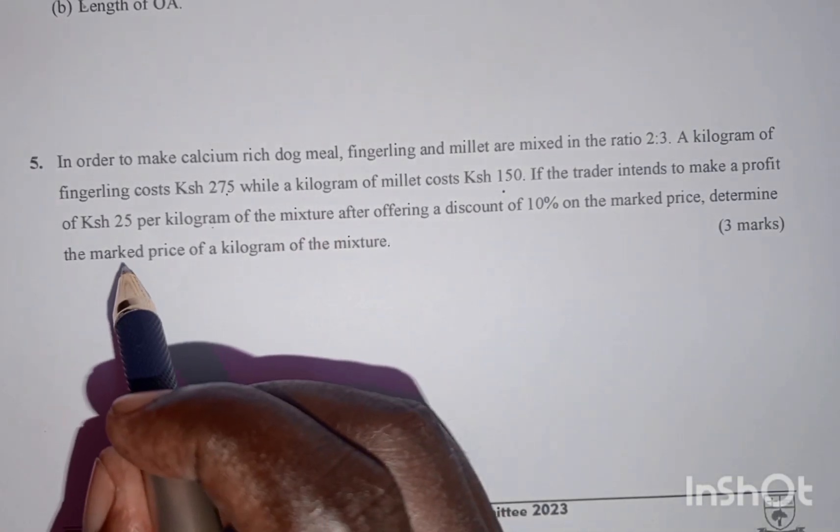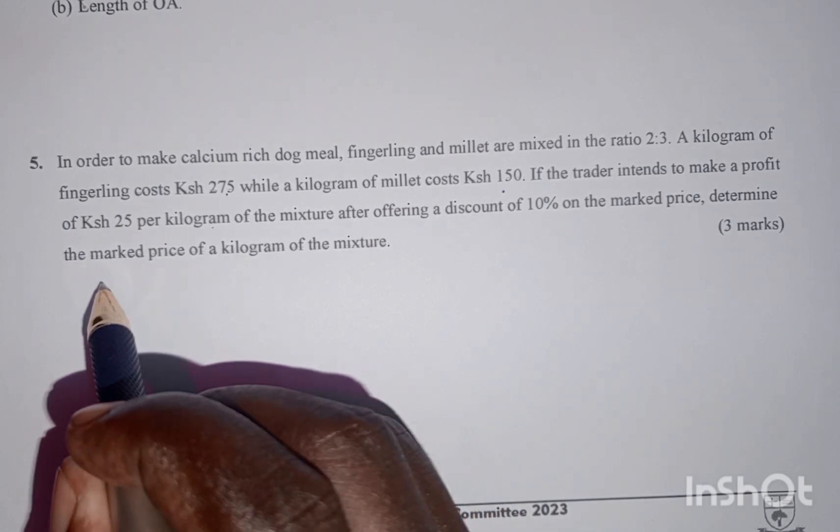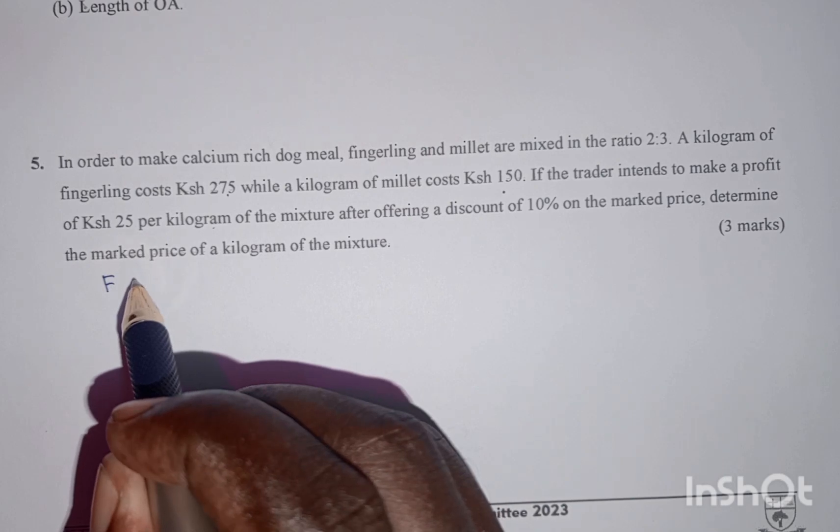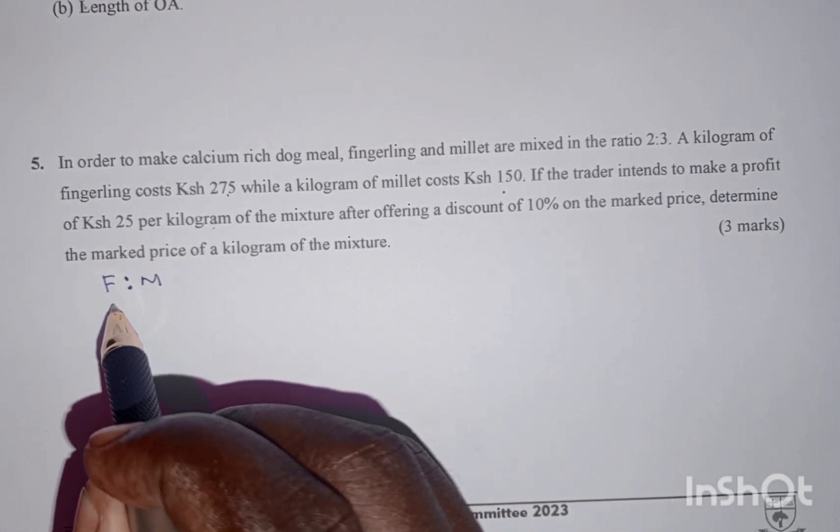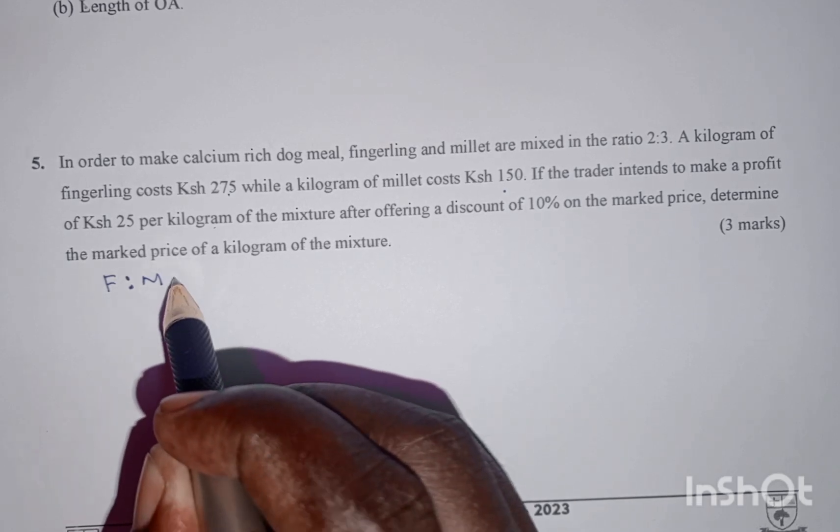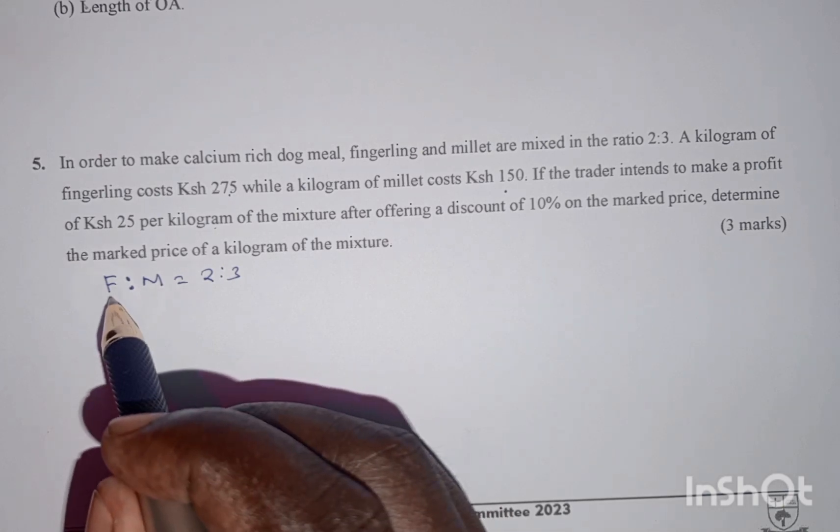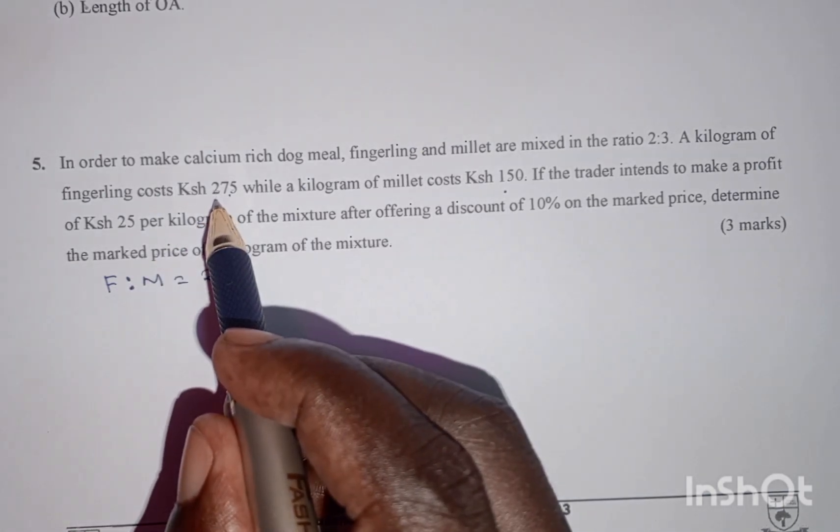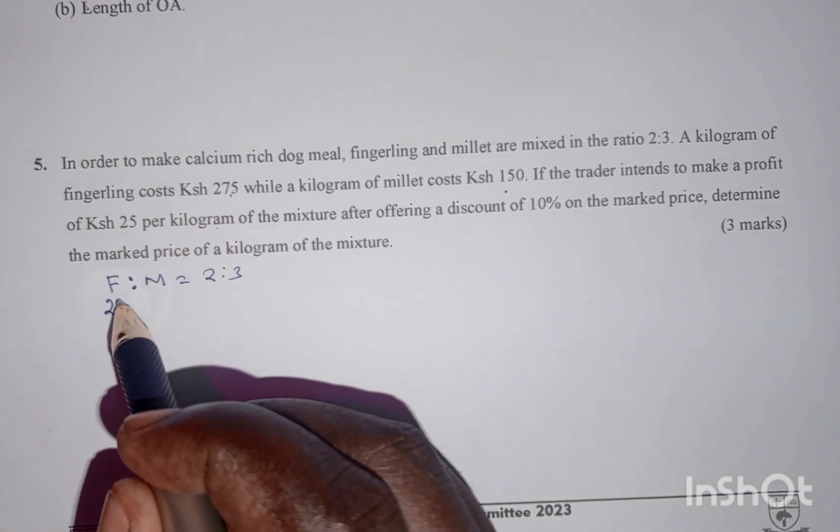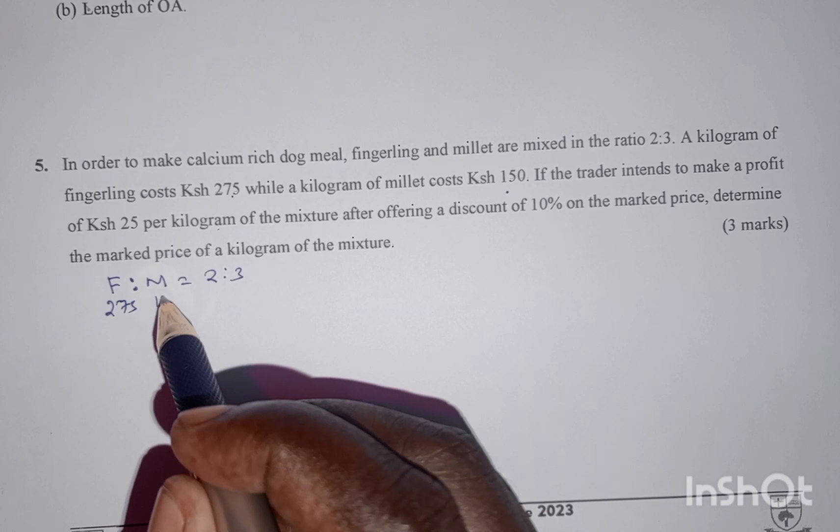We have two brands, fingerling and millet, and we have been told the two are mixed in the ratio of 2 to 3. A kg of fingerling costs 275 while that of the millet costs 150.